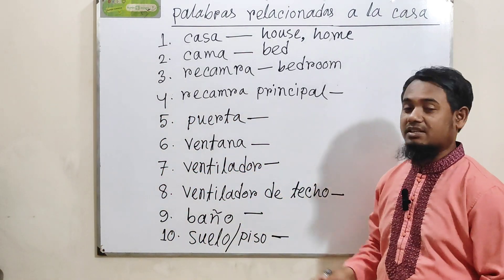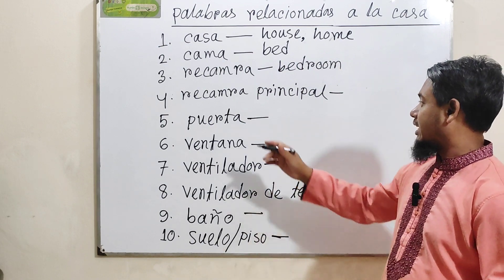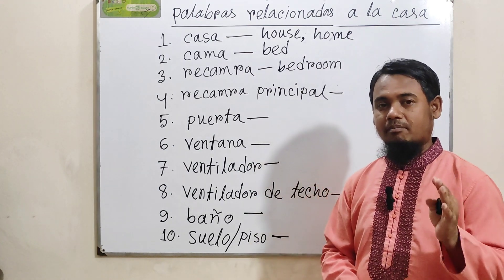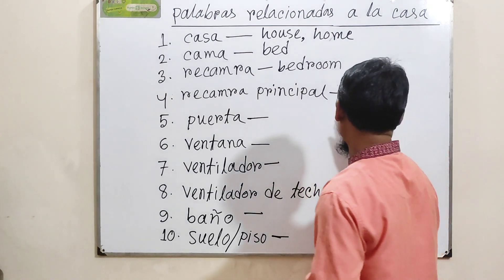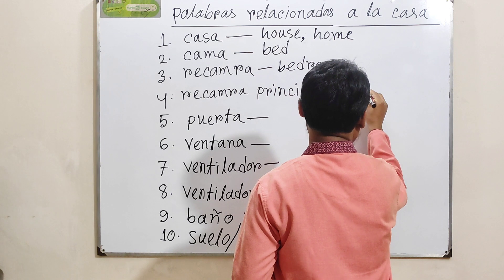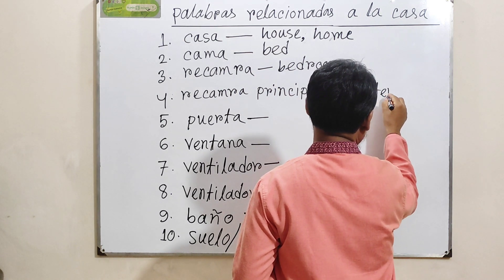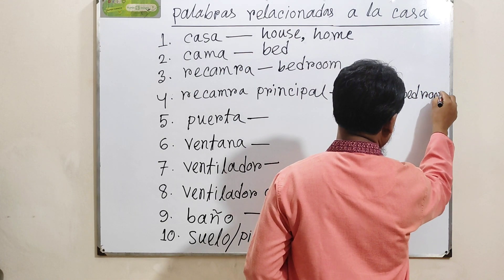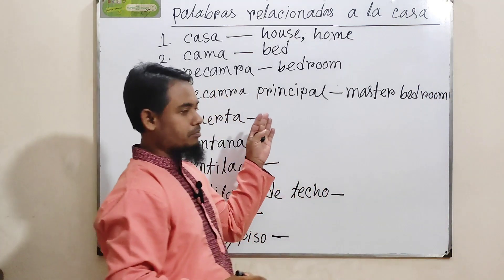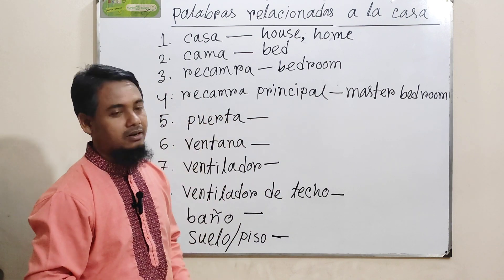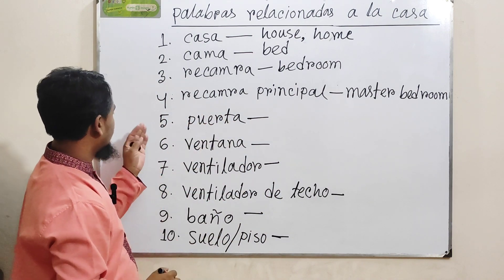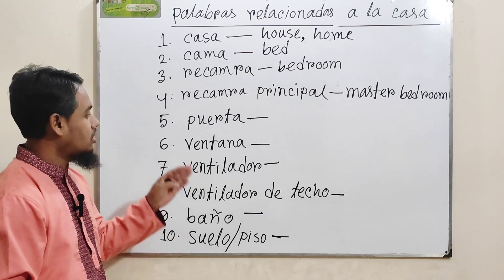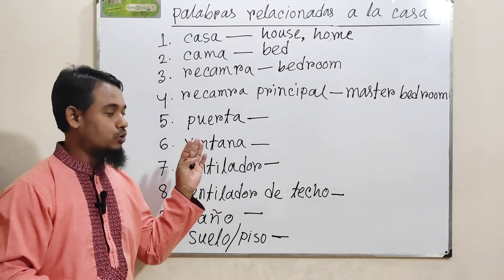Recámara principal is a very common word. Recámara principal means 'master bedroom'. It is very common in the city area. Número cinco: 'puerta'. Que significa puerta? Puerta means 'door'.